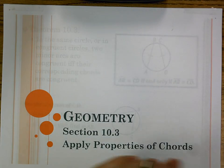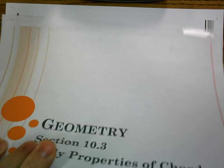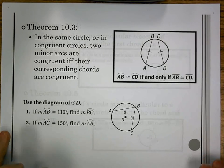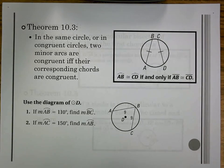Section 10.3 is called applying properties to chords. We're going to look at various properties involving chords, and a lot of things we'll be looking at congruence with those chords. Our first theorem is 10.3, and that says in the same circle or in congruent circles, most of the time it would be the same circle, two minor arcs are congruent if and only if their corresponding chords are congruent.